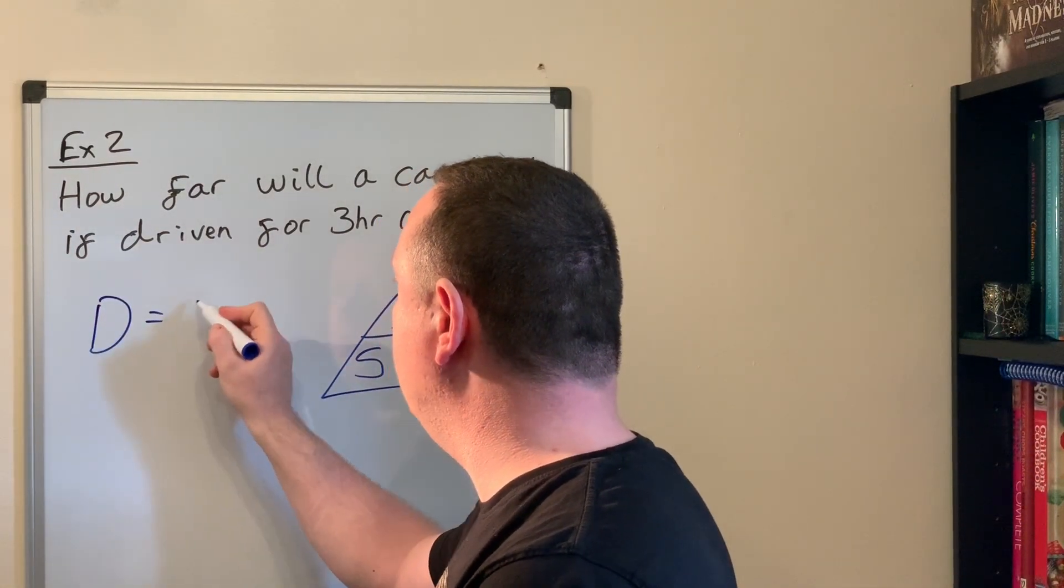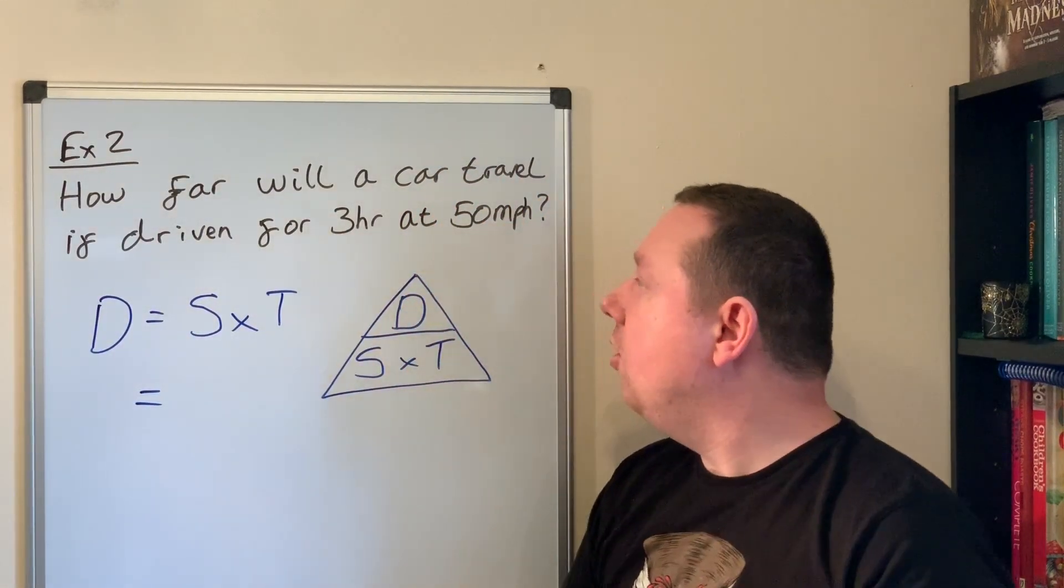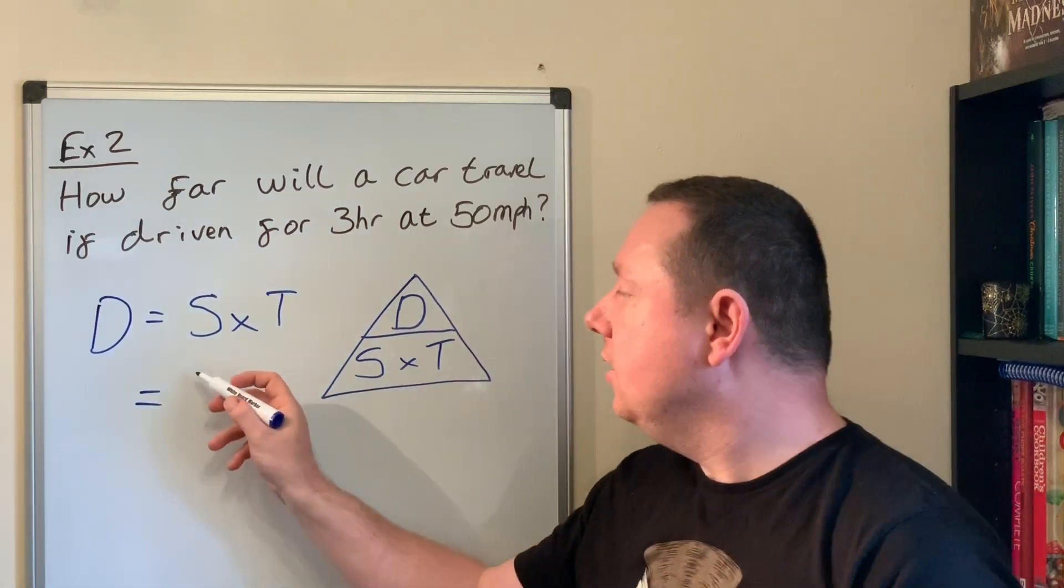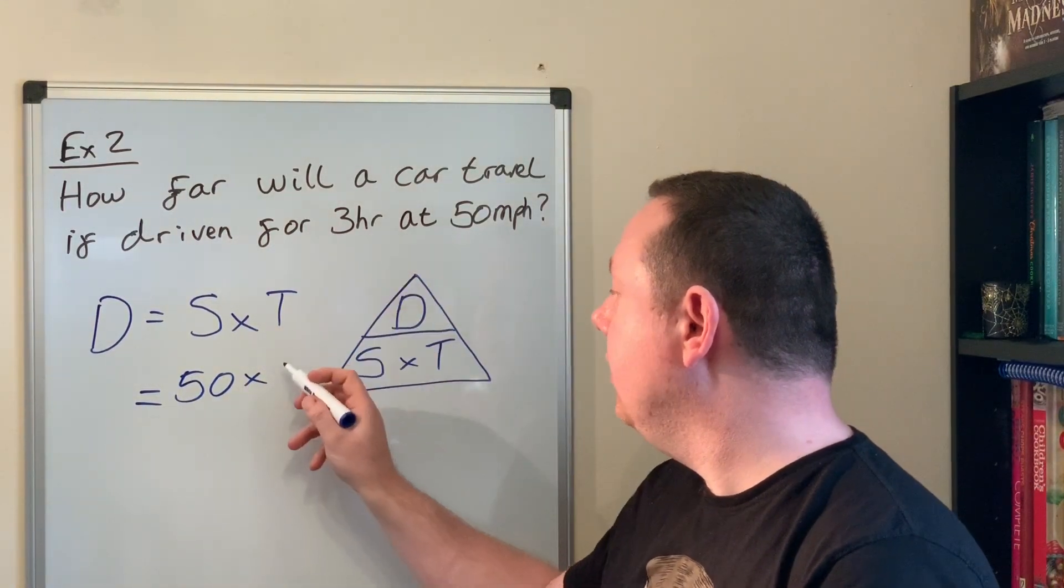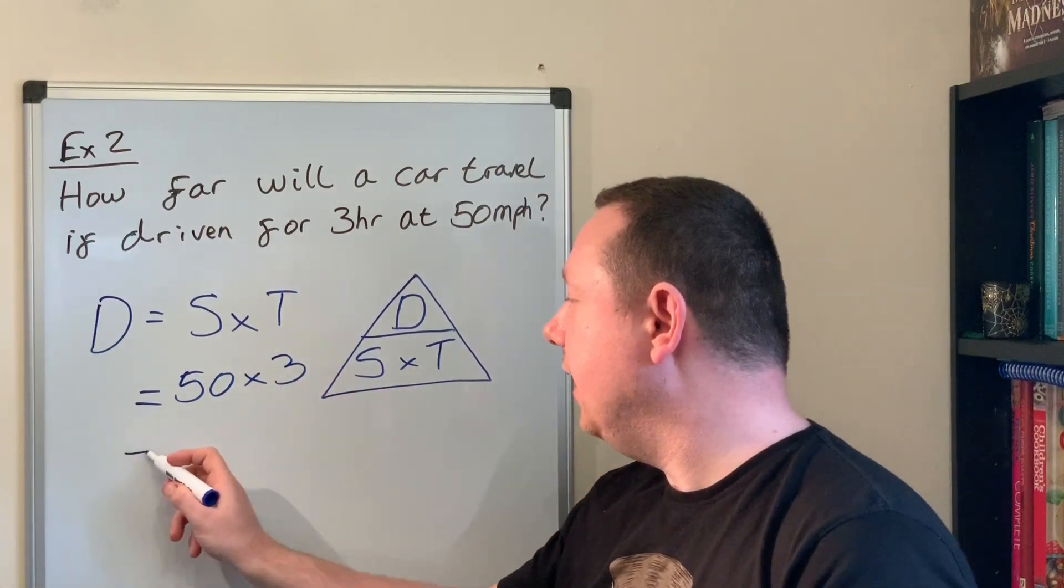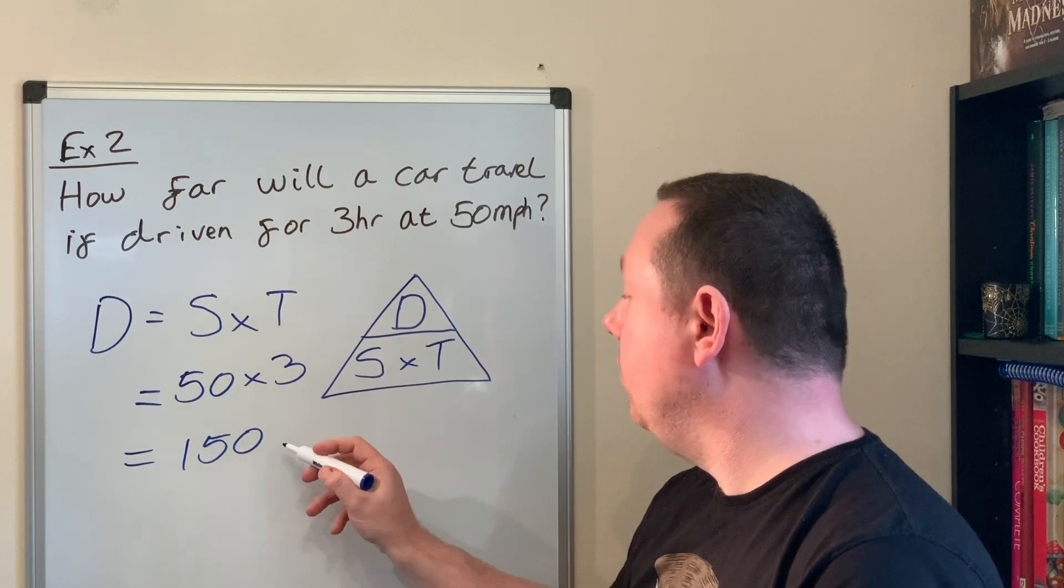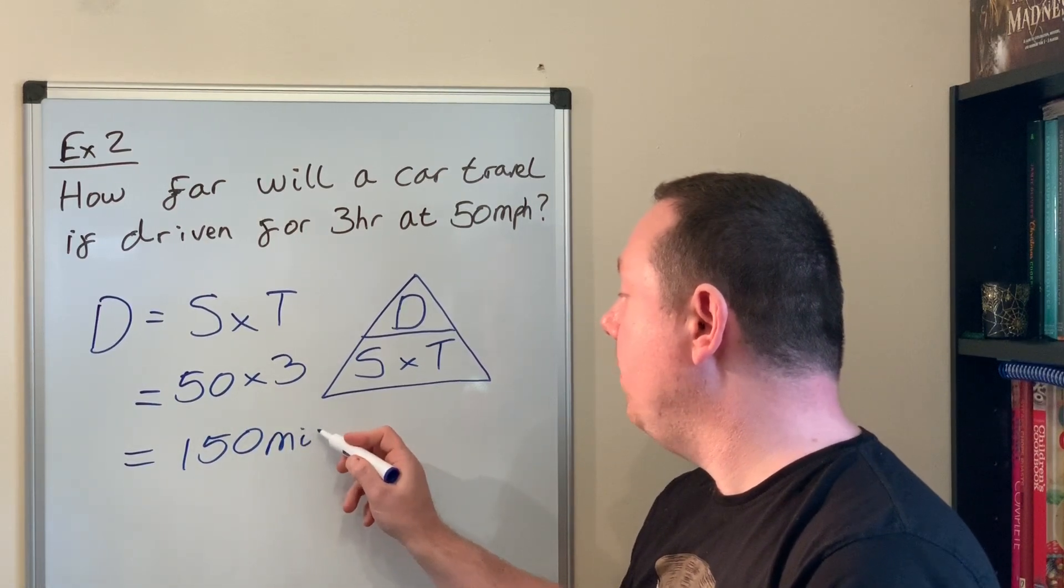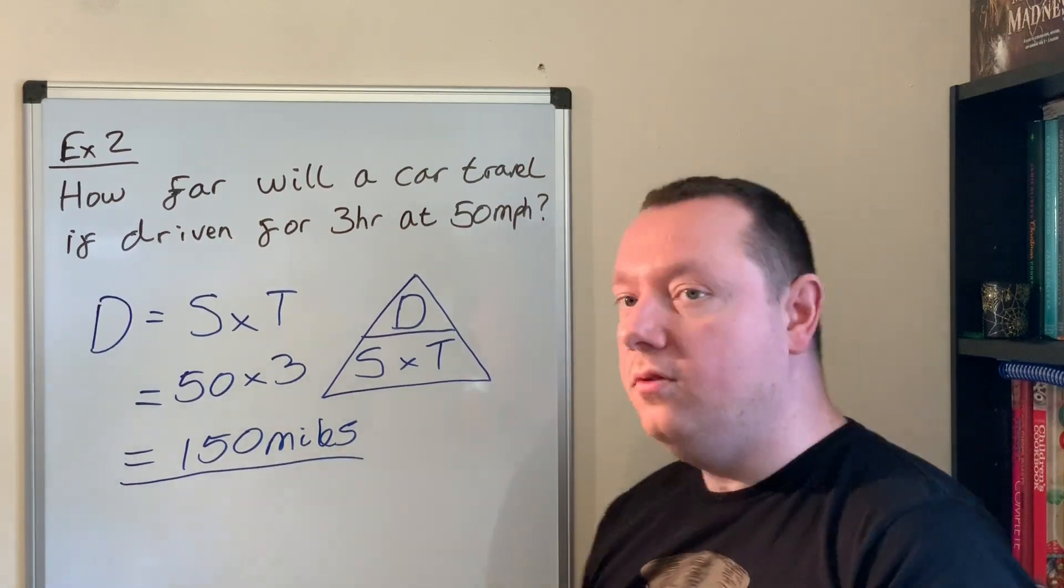Now I substitute what I've got. Our speed is 50, so it's 50 times our time which is 3. 50 times 3 is 150, and our units are miles because it was miles per hour. That's a simple example for distance.